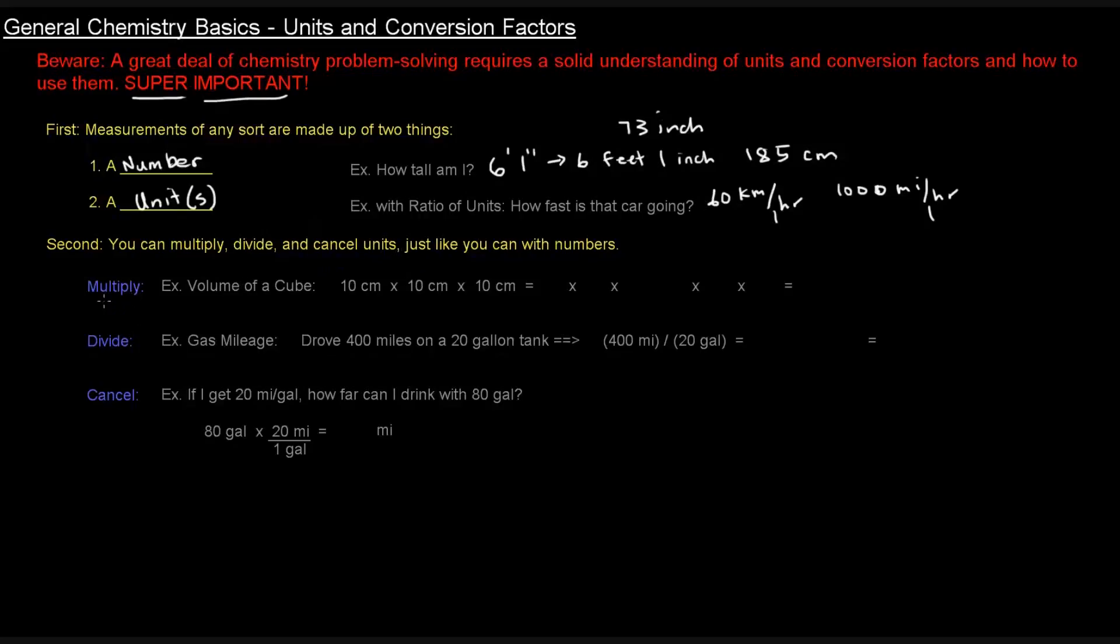The second thing: you can multiply, divide, and cancel units just like you can with numbers. For example, thinking about the volume of a cube. The volume of a cube is length times width times height. So let's say each dimension is 10 centimeters. We take the 10s and multiply them 10 times 10 times 10, and the centimeters and multiply them.